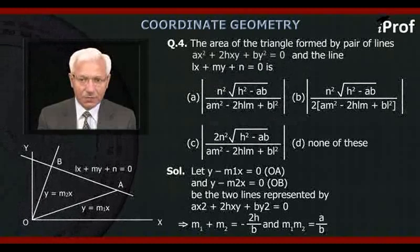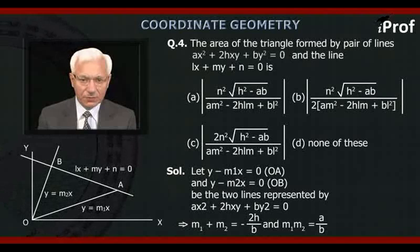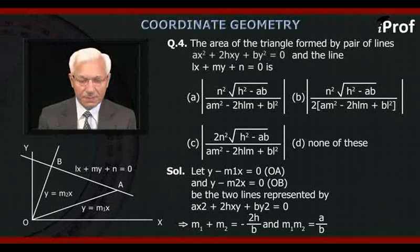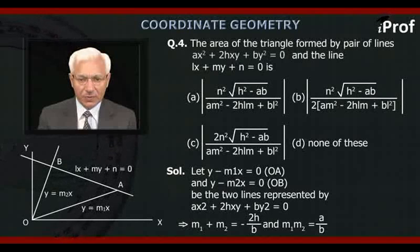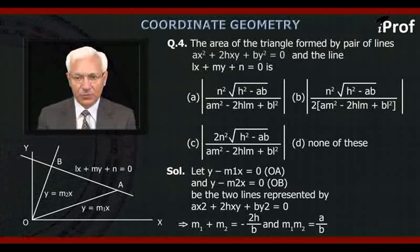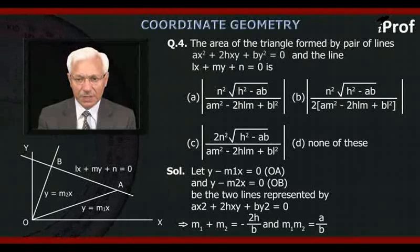The area of the triangle formed by AX² + 2HXY + BY² = 0 and the line LX + MY + N = 0. Option A: N² √(H² - AB) / (AM² - 2HLM + BL²). Option B: N²(H² - AB) / (2(AM² - 2HLM + BL²)). Option C: 2N²√(H² - AB) / (AM² - 2HLM + BL²). Option D: None of these.